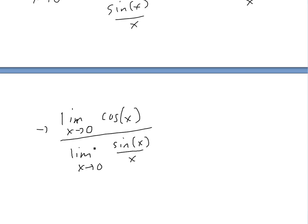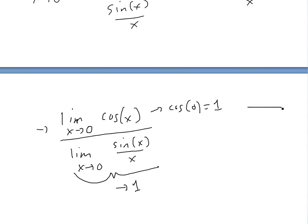We'll have the limit as x approaches zero of cosine of x, divided by the limit as x approaches zero of sine(x) over x. As shown in an earlier video, the limit of sine(x)/x as x approaches zero equals one. For the numerator, cosine of zero equals one — you can verify this from the graph, or from the definition: adjacent over hypotenuse at zero degrees gives A/A, which equals one. So we get one over one, which equals one. The limit is one.